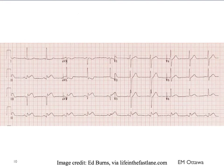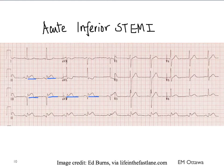Let's look at this ECG. You can pause here to decide where the ST elevations are and whether they belong to the same territory. The ST elevations are in leads 2, 3, and AVF — that is the inferior portion of the heart. Therefore, this is an acute inferior ST elevation myocardial infarction.